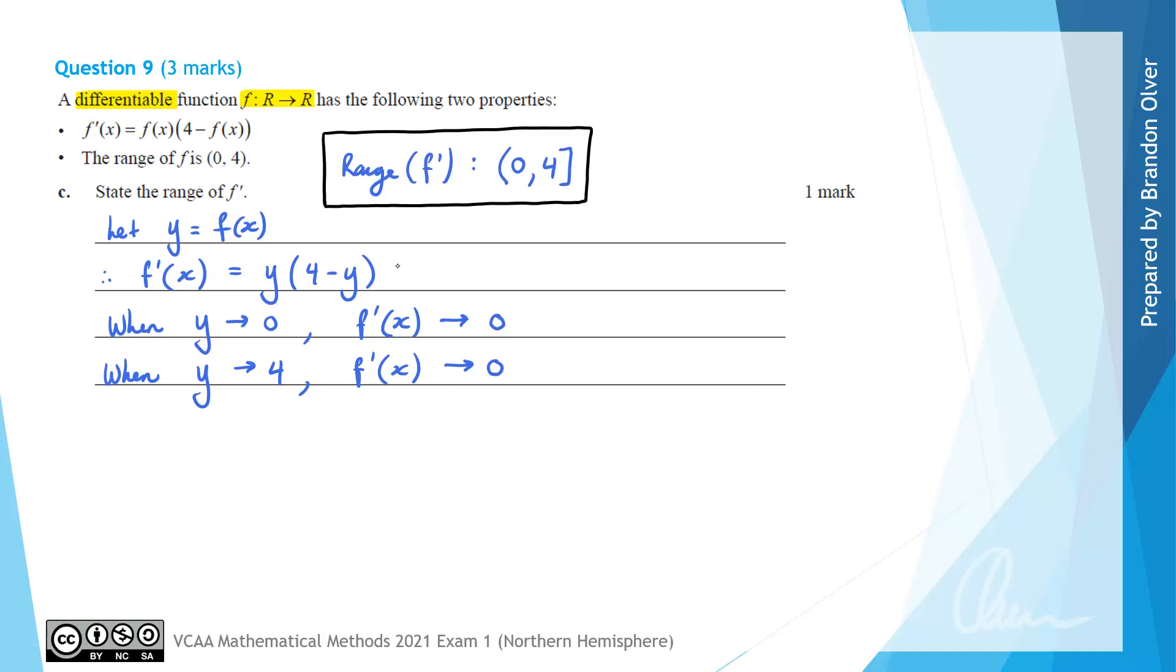And if we look back up here, this is kind of like a quadratic equation. It does have y in it, but we can maximize that value when y equals 2. So when y equals 2, we get 2 times 4 minus 2, which gives 4. So if I just write that out, the maximum, so that doesn't mean a stationary point, it just means the largest f' value. The maximum occurs when we get a y value of 2, or an f(x) value of 2, which 2 does exist in that range, in the middle essentially.